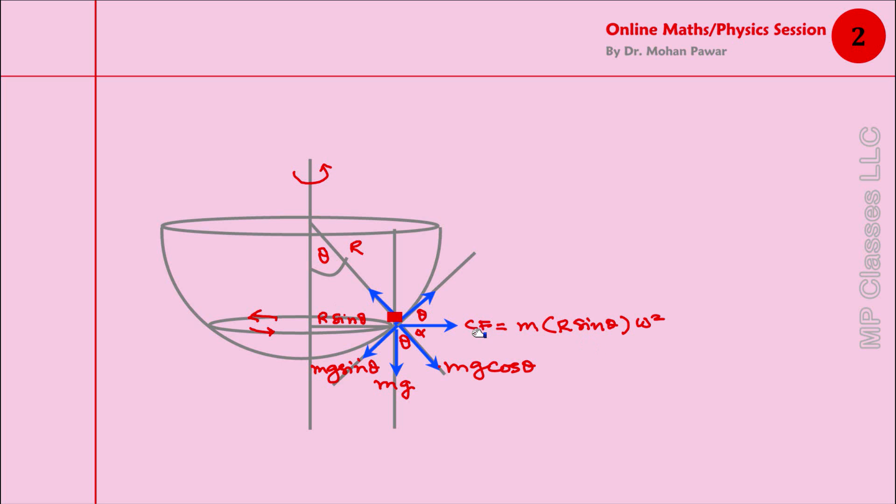What about CF, the centrifugal force? Because this is theta, we will first find this one because it is the cosine component. I am going to write this as CF cos θ, which is, after putting this value for CF, mR ω² sin θ cos θ. That is the cosine component of centrifugal force. Then the sine component will get added here, so I write mR ω² sin² θ.